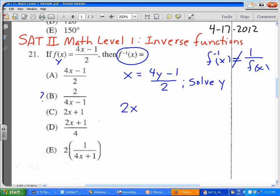So multiply by 2 on both sides, you're going to have 2x is equal to 4y minus 1. If you add 1 on both sides, 2x plus 1 is equal to 4y.